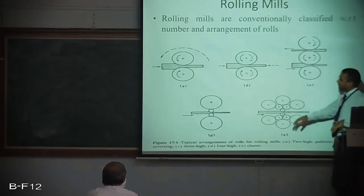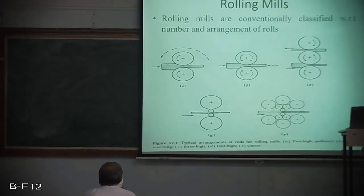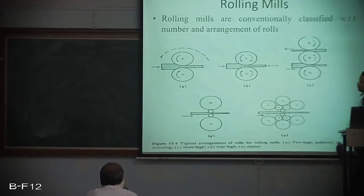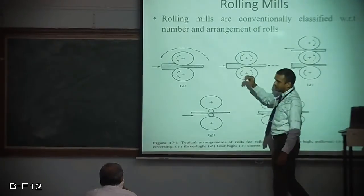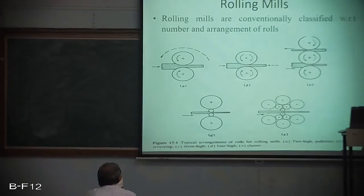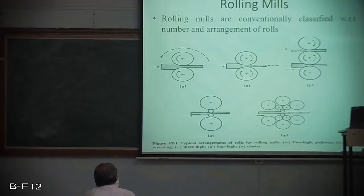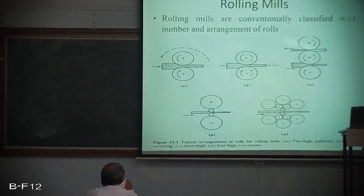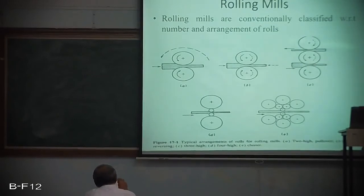This disadvantage was overcome by the 2-high reversing mill, where the mill can rotate in both clockwise and anti-clockwise directions, allowing metal to move left to right as well as right to left. The rotation of rolls can be reversed, enabling a series of reductions using the same set of rolls by passing back and forth. However, the disadvantage of the reversing mill is that the rolls must be stopped, reversed, and brought back to rolling speed between each pass.